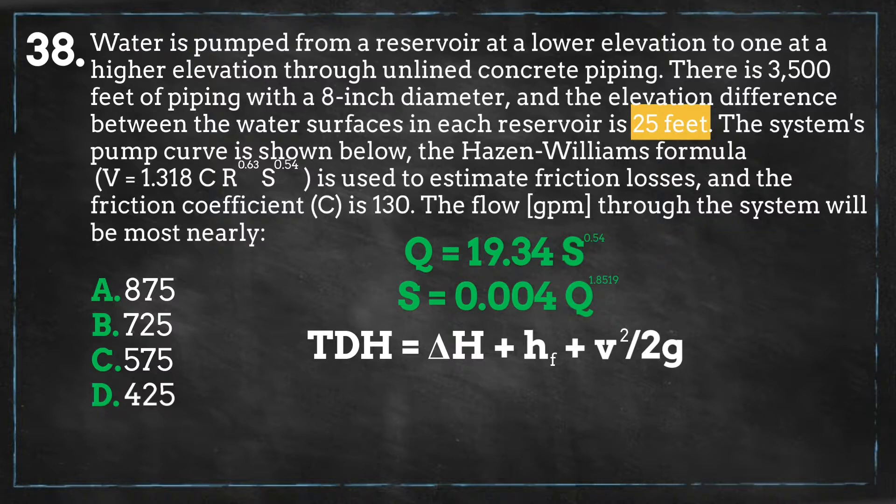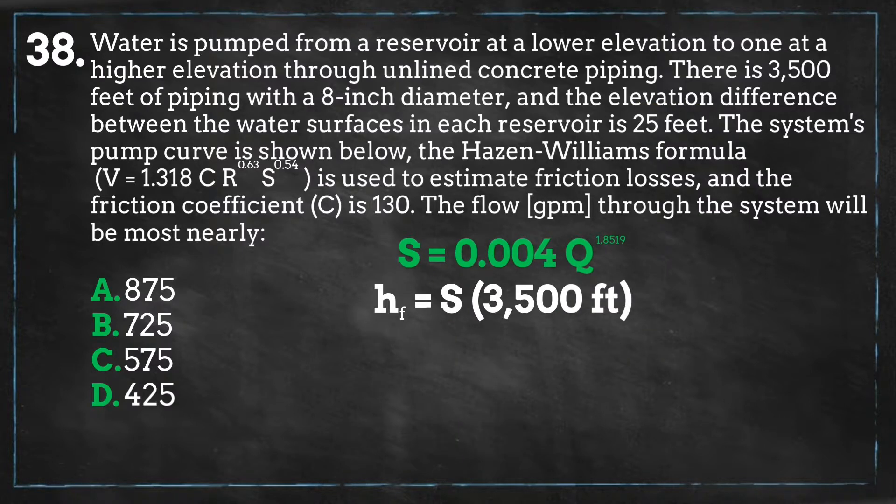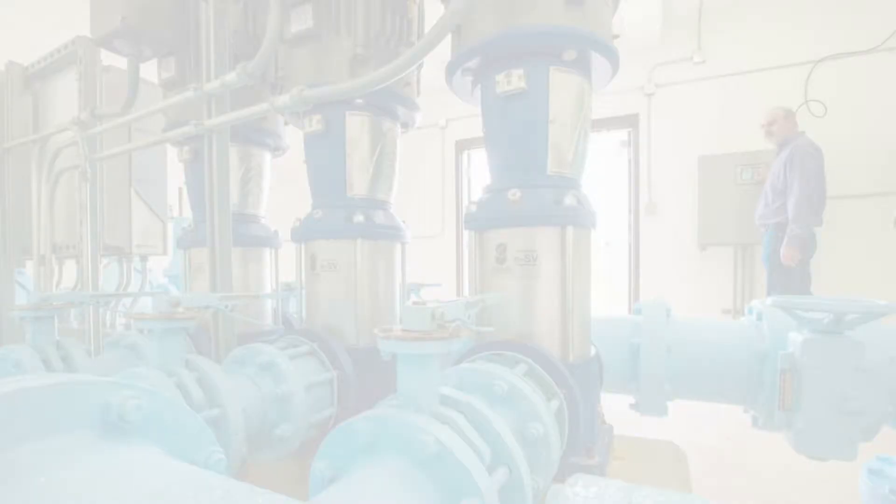Delta H equals 25 feet across the system. We can solve for the velocity at given flow rates, and the slope equation, S equals H sub F divided by L, can be manipulated to solve for H sub F, which equals the slope times the pipe length. Therefore, we will multiply the length of our piping by our equation equaling the slope to get the head loss of that specific flow rate.